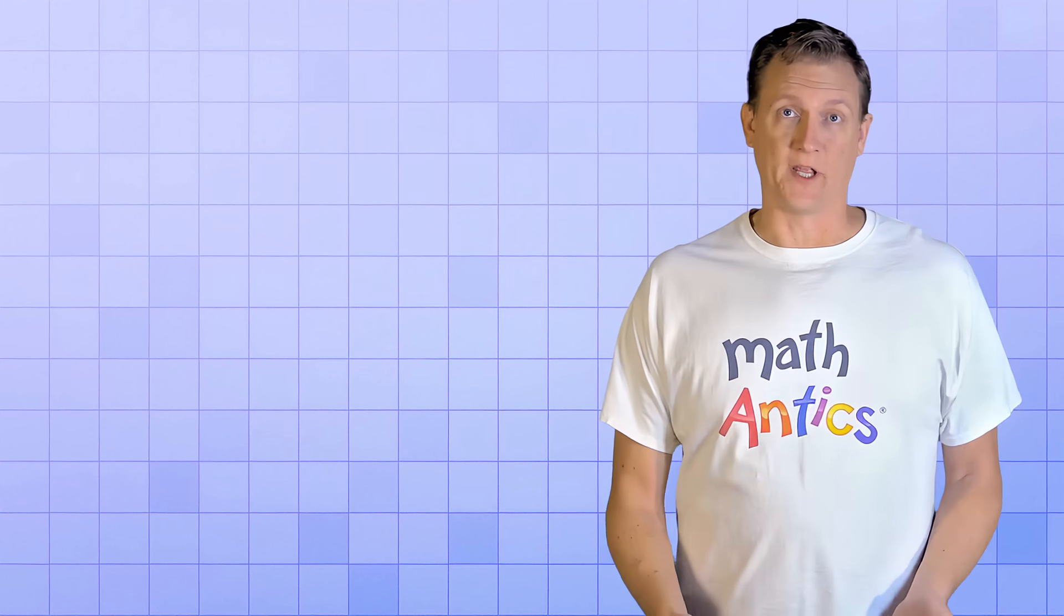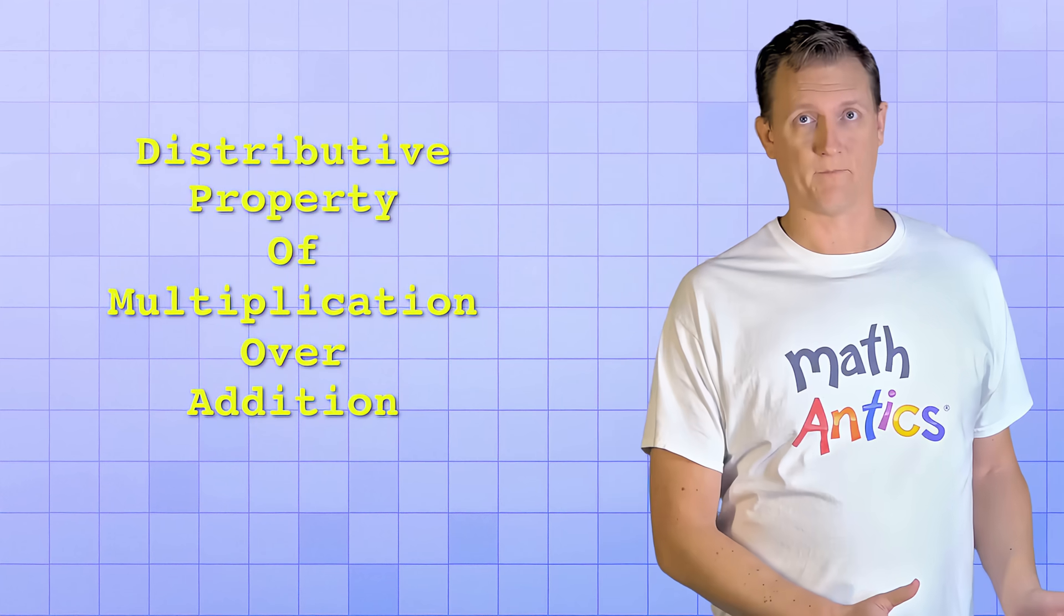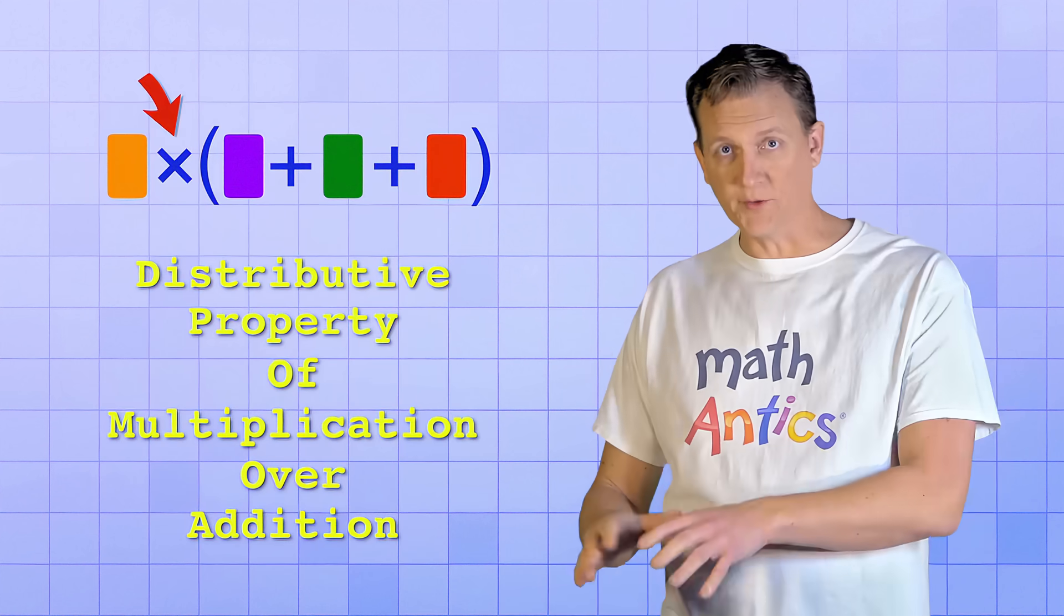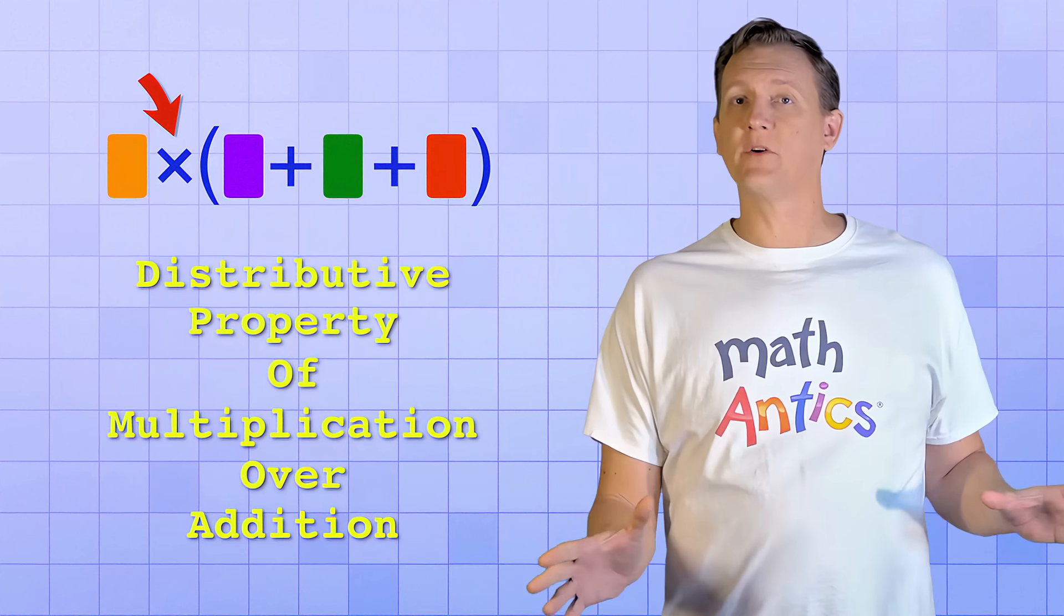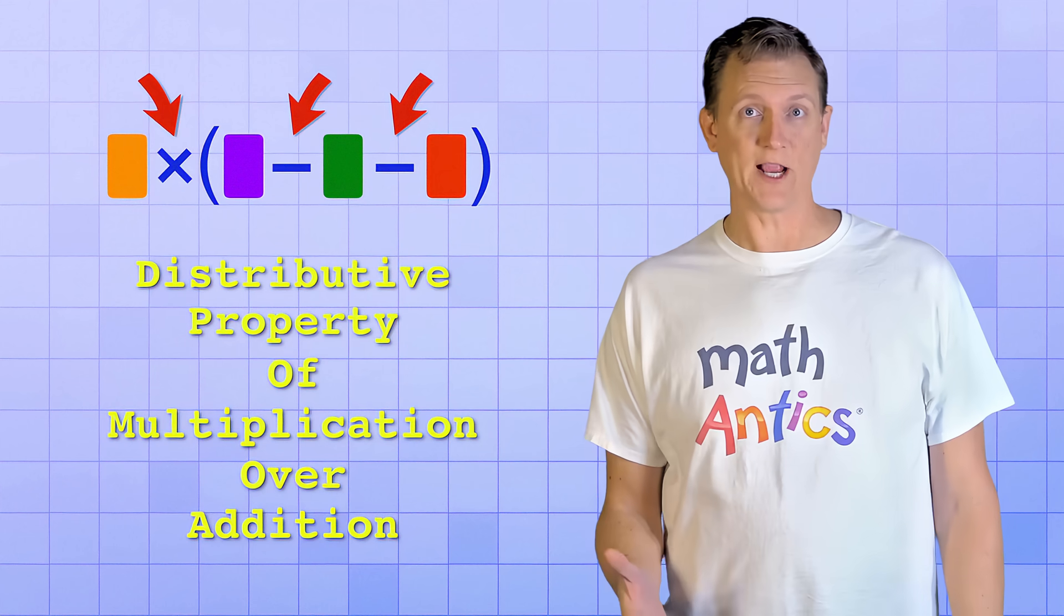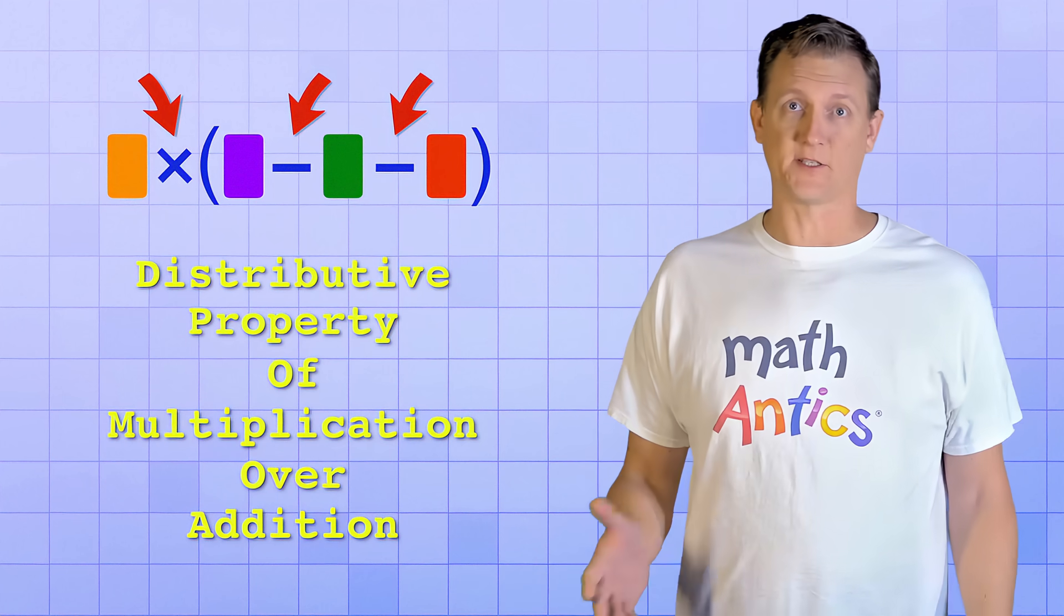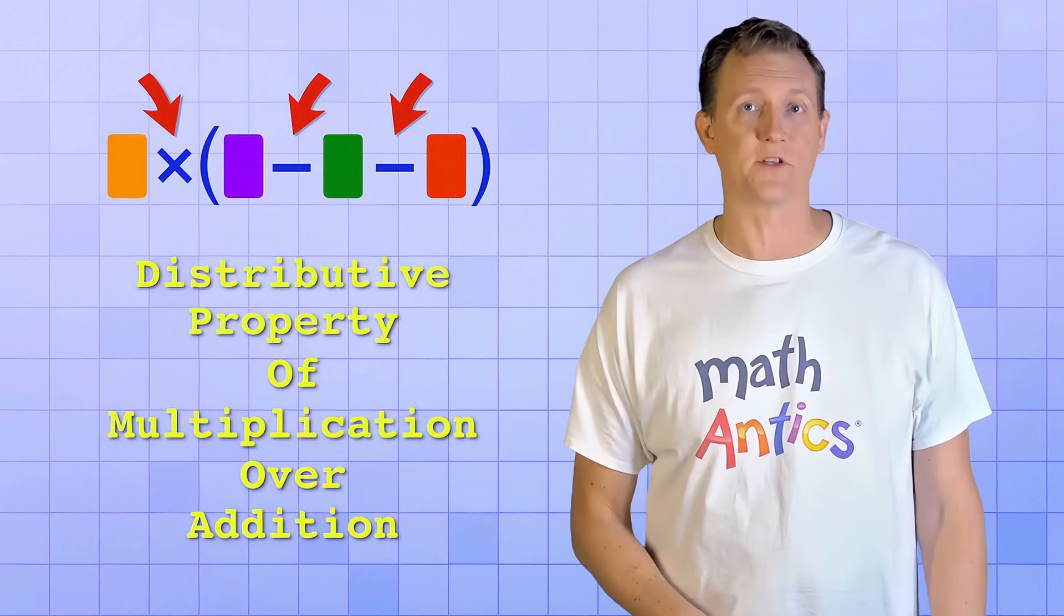That's why the technical name is the Distributive Property of Multiplication Over Addition. You're distributing the multiplication over all of the members of a group that are being added. And the reason that it also works for subtraction is that subtraction is really just a negative form of addition, since subtraction and addition are inverse operations.